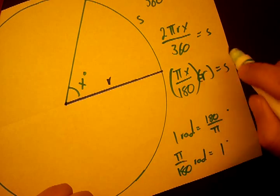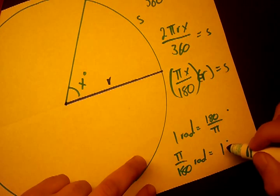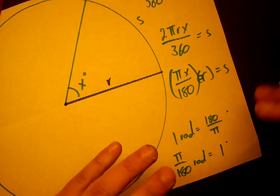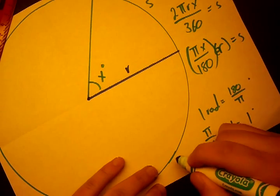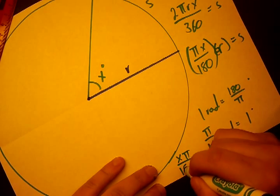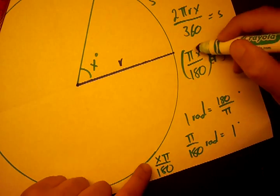So, if 1 degree equals π over 180 radians, then x degrees equals x times π over 180 radians. And, that is the quantity that's right here.